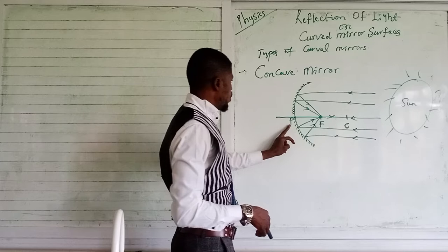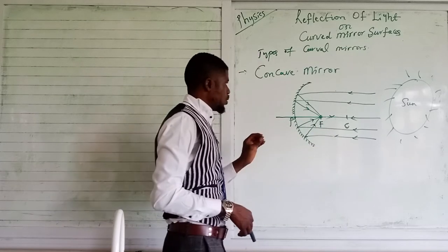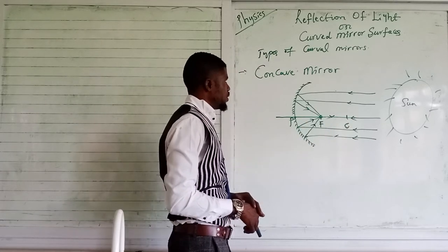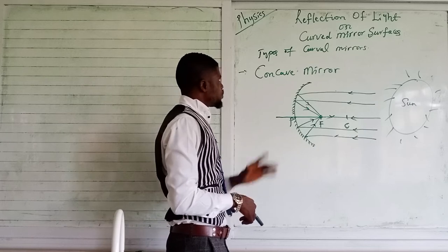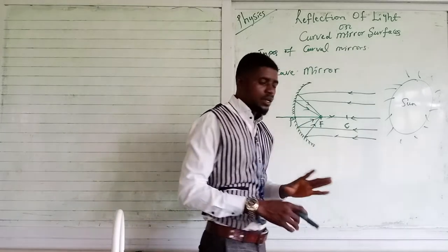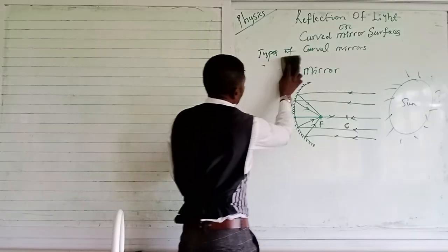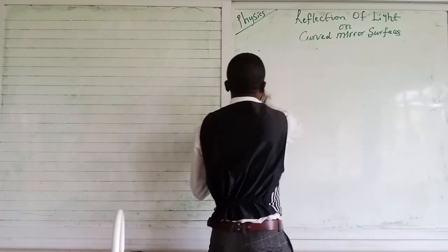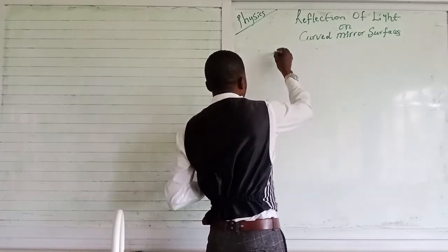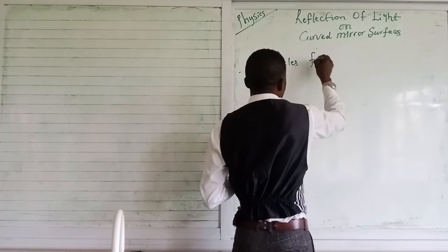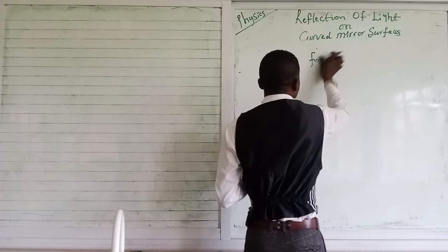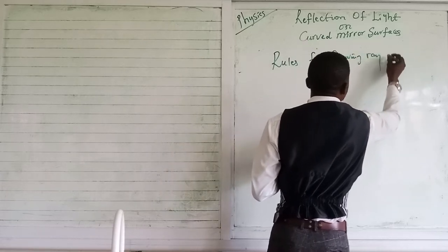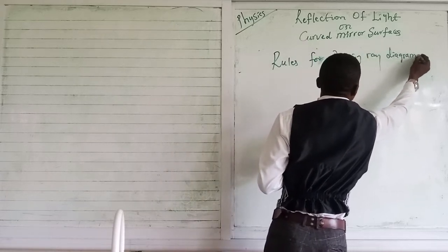The distance from the pole of the mirror to F is called the focal length. The distance from P to C, the center of curvature, is called the radius of curvature. The next thing is the rules governing ray diagrams.